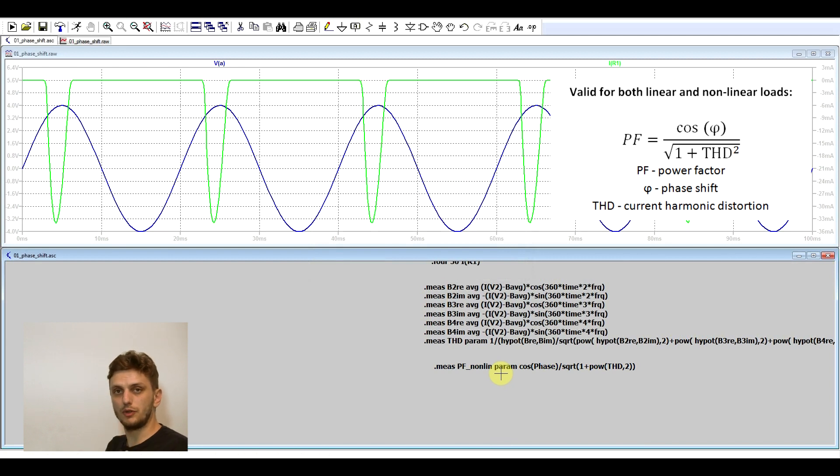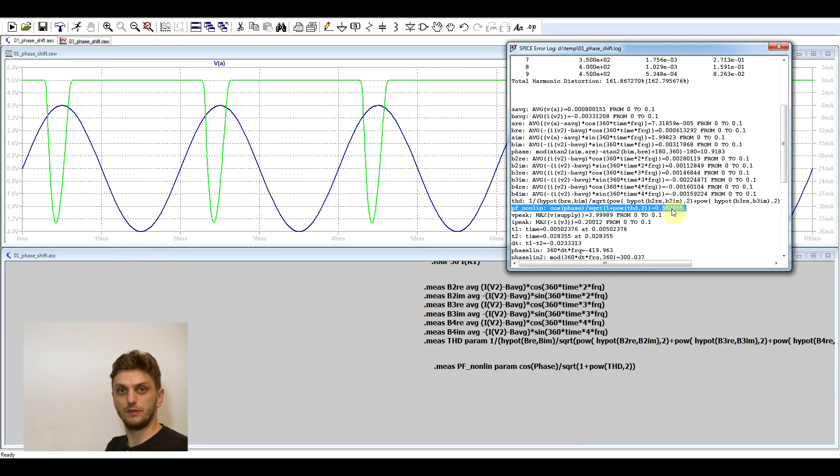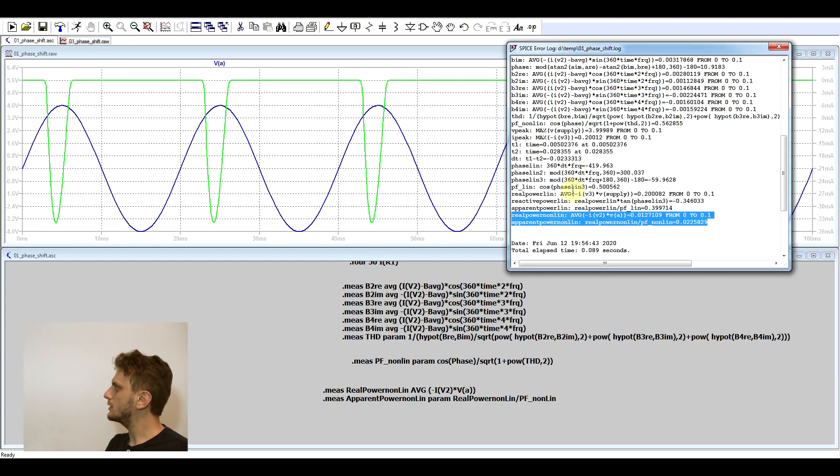So now finally we can calculate the power factor for a non-linear load by taking the cosine of the phase and dividing it by the square root of 1 plus the harmonic distortion squared. So we get a power factor of 0.56. And finally we can calculate our real power and apparent power, first of all by taking the average power used from the power supply, and secondly dividing this real power by our calculated power factor. So we got our measurement results here, and we get a real power of 12.7 milliwatts and an apparent power of 22.58 volt amps. So I didn't really have a very large load, that's why we're getting such small values.